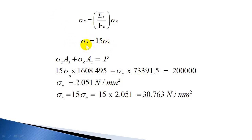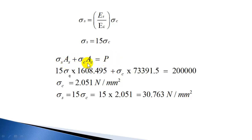This means unit area of steel takes 15 times more load compared to unit area of concrete. The second relation is the load equilibrium: load taken by steel plus load taken by concrete equals the total load, because the total load applied on the column is shared by both materials. Load taken by steel is σs × As and load taken by concrete is σc × Ac, and their sum equals the total applied load. Since the modular ratio is 15, σs = 15σc always holds regardless of the magnitude of the applied load.